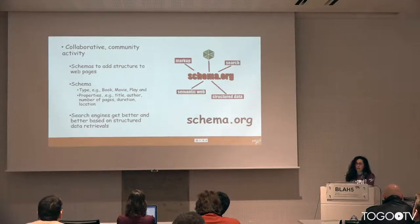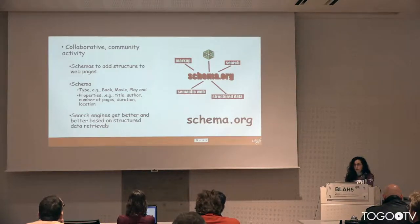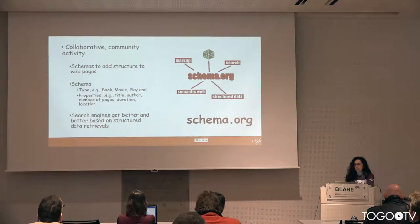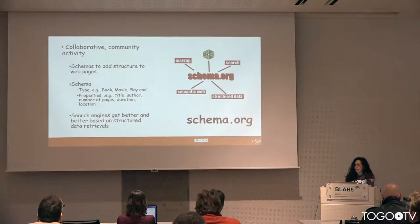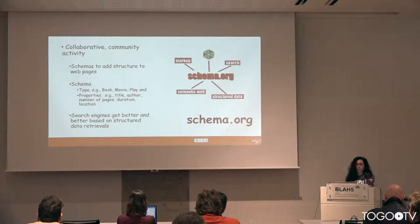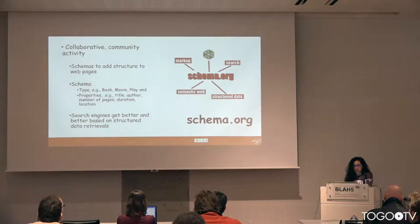Schema.org is just a way to add structured data to web pages — you can put some tags in different formats. RDFa can be JSON-LD; JSON-LD is nowadays the preferred format. This helps search engines figure out in a better way whether a web page refers to a book, a play, or a movie, because you can have the same title for all of them.